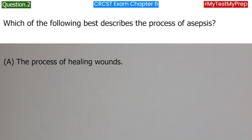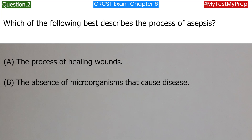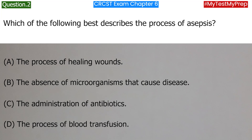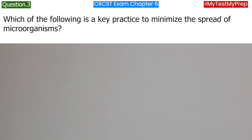Which of the following best describes the process of asepsis? A. The process of healing wounds. B. The absence of microorganisms that cause disease. C. The administration of antibiotics. D. The process of blood transfusion. Answer: B. The absence of microorganisms that cause disease.